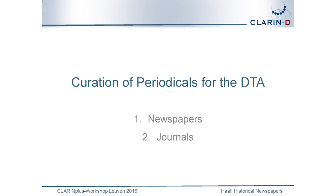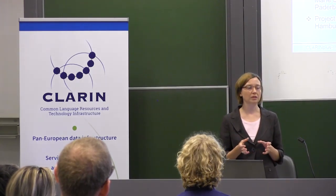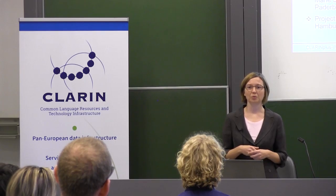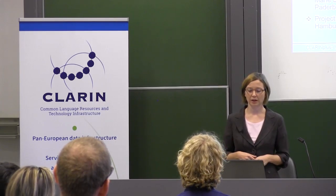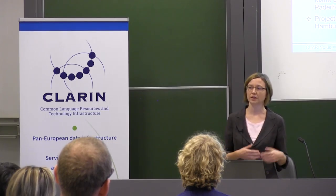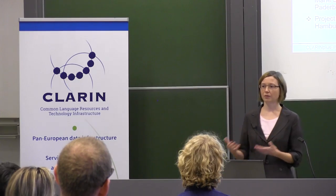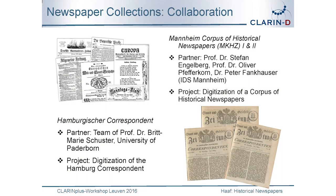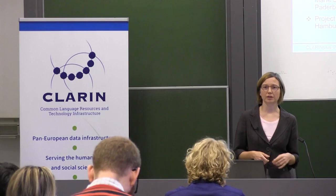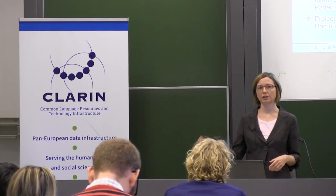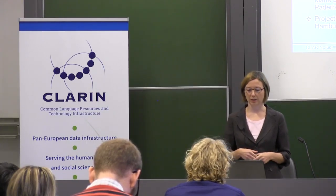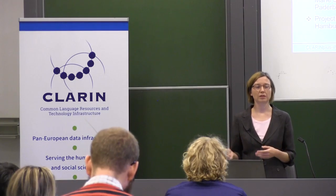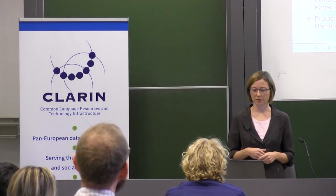Now I'd like to present which newspaper corpora we currently have — and as you'll see, they are a lot smaller than the European newspaper corpora. This is due to our approach that everything has to be manually transcribed, which involves a lot of manual effort. One collection is the Mannheim Corpus of Historical Newspapers, where we collaborate with the Institute of the German Language in Mannheim. One part is already digitized and currently provided via the DTA; the other is being digitized according to the DTA workflow.